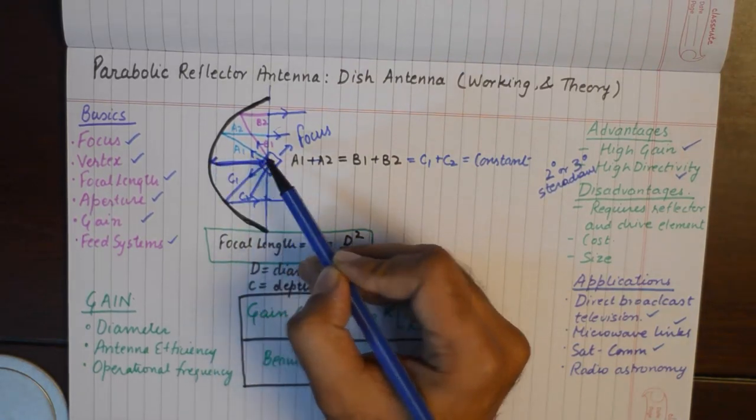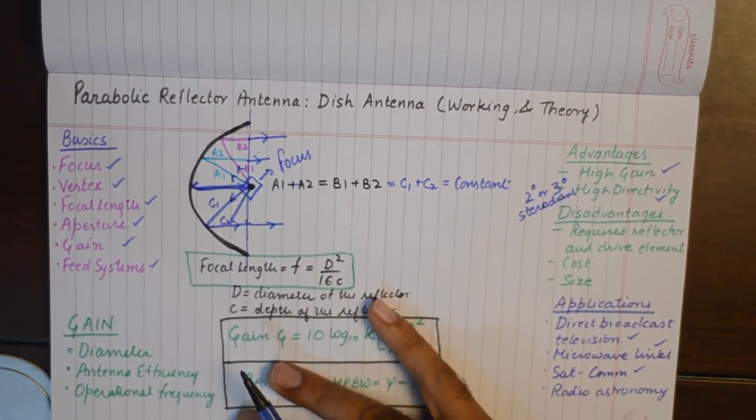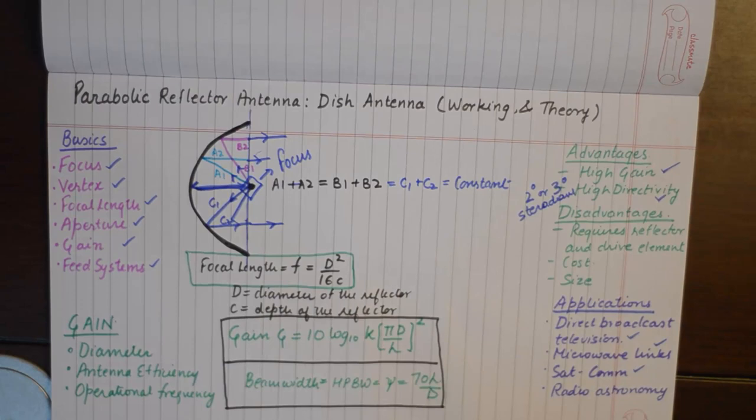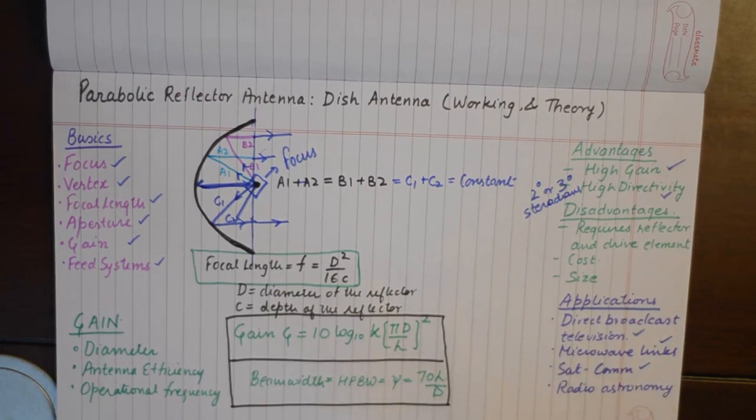This part is depth and of course from the face of the parabolic reflector we can find the diameter. One important formula for reflector antennas that you would need to remember is the gain of the antenna.